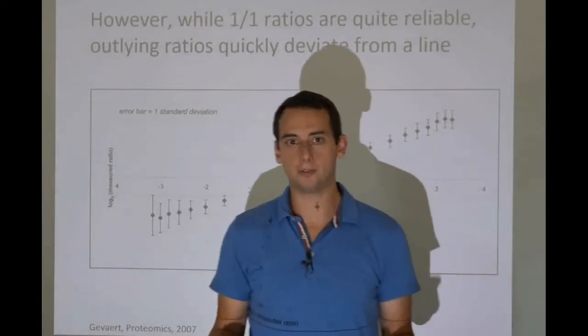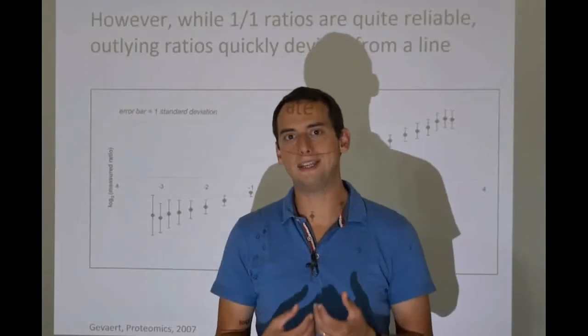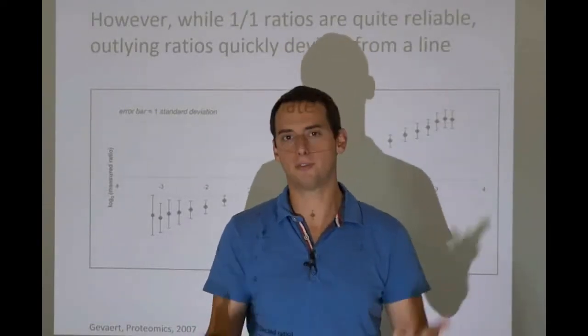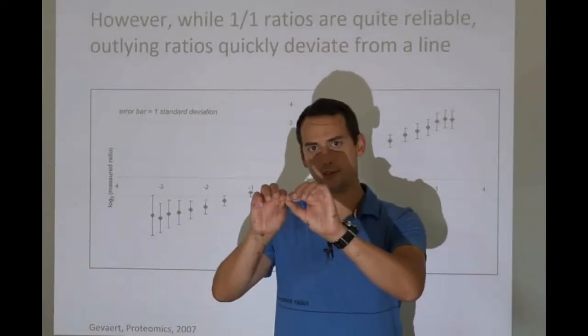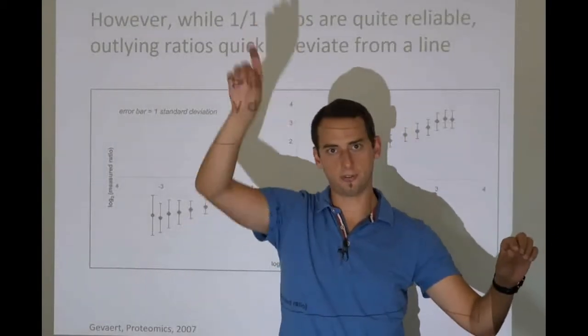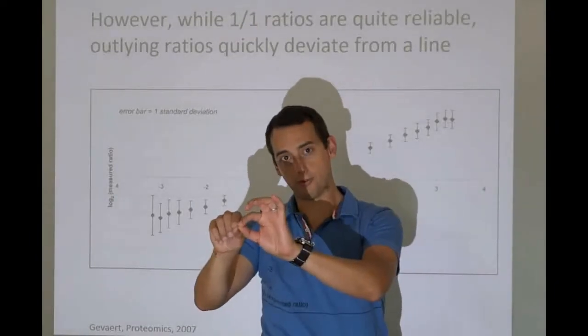You may need a hundred photons before you start seeing something. So if this is the axis of the number of photons, and this is the axis of the response of your neurons in your brain, you can say that if the number of photons is too low, there will be no response.